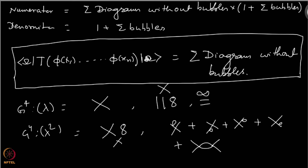In quantum field theory, we have seen that the objects of interest to answer the questions we can ask are the Green's functions. We have also been able to put them in the form of Feynman diagrams and we know the rules of calculating Feynman diagrams. You saw that there are diagrams containing loops and there are diagrams which do not contain loops.